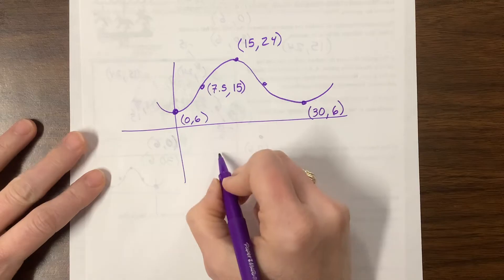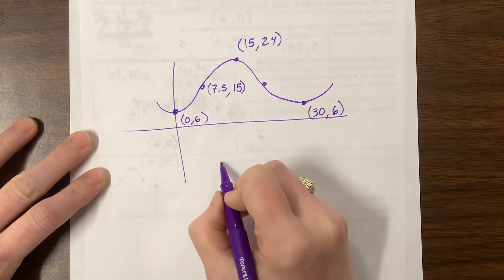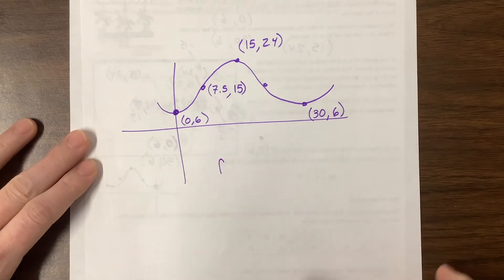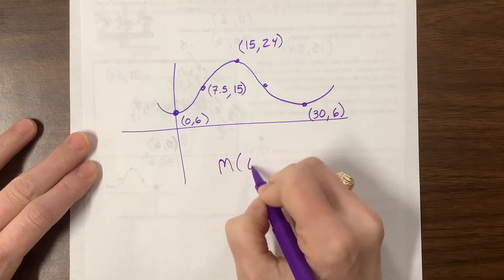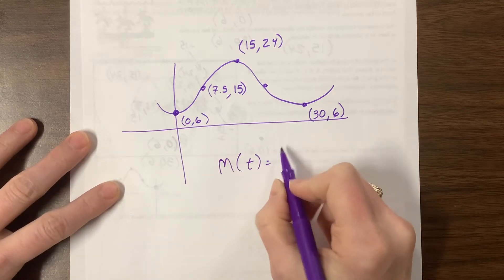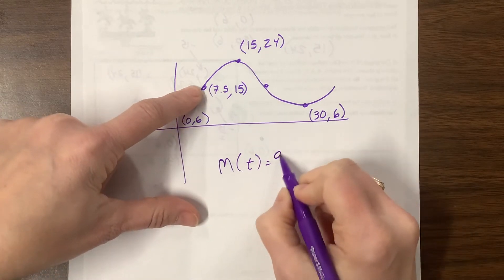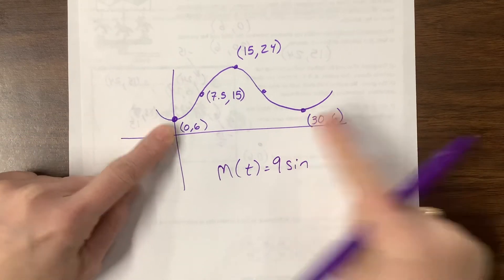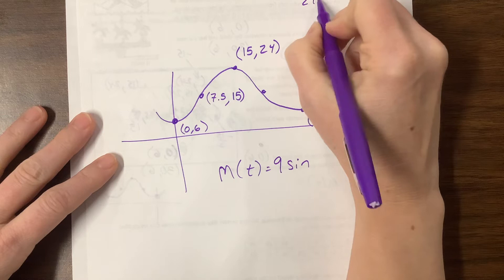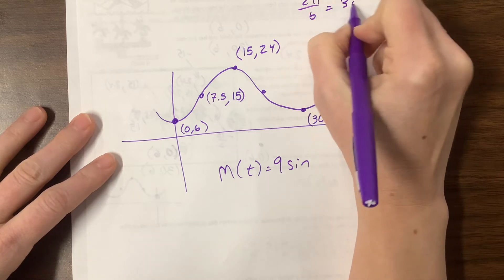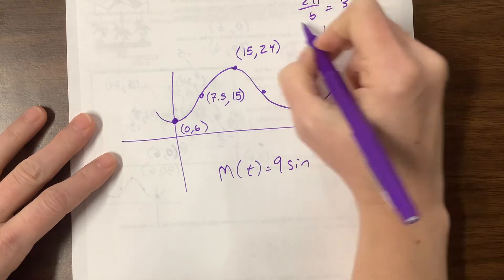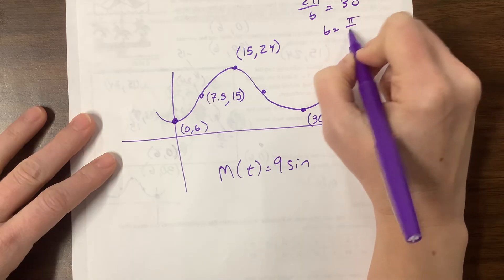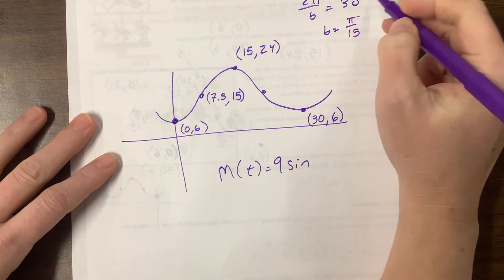So now if they want me to write a sine curve, my amplitude. So what did they say M? I think it was M of T. M of T is equal to our amplitude was nine sine. I haven't figured out my period. Let's see if anybody comes to see me. Two pi over B is equal to 30. So B is equal to pi over 15.